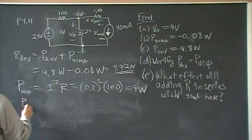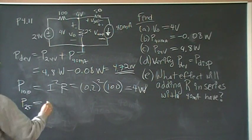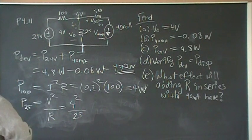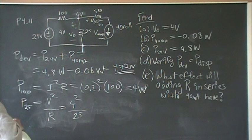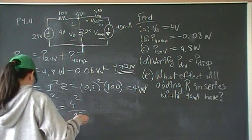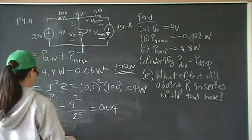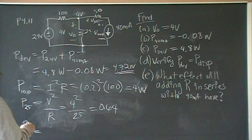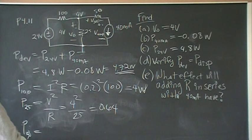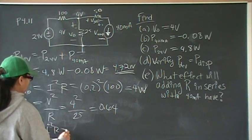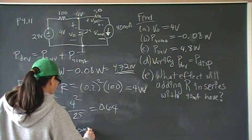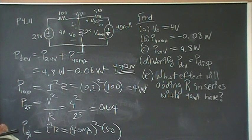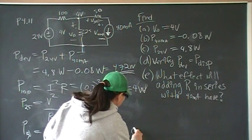Power dissipated by the 25 ohm resistor. We take V squared over R. That's 4 squared over 25. So it's going to give us 0.64. And the power dissipated by the 50 ohms is going to be I squared R. That's going to be 40 milliamp squared times 50. So 0.04 squared times 50 equals 0.08.